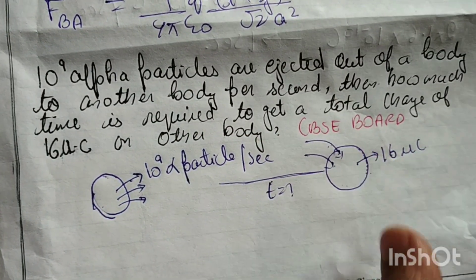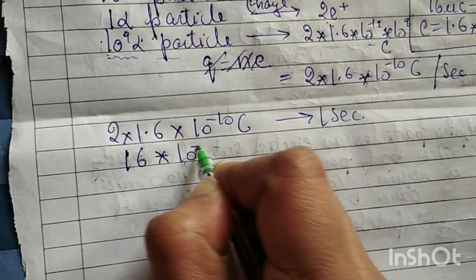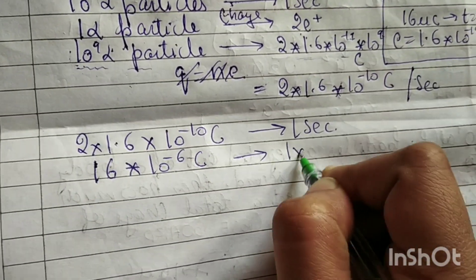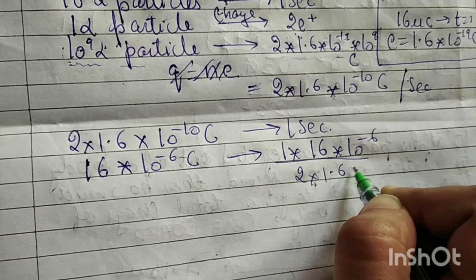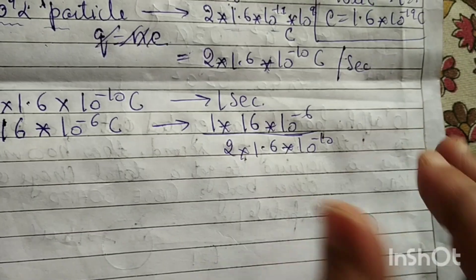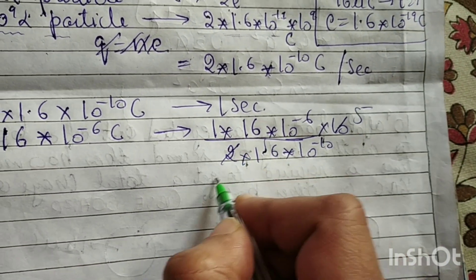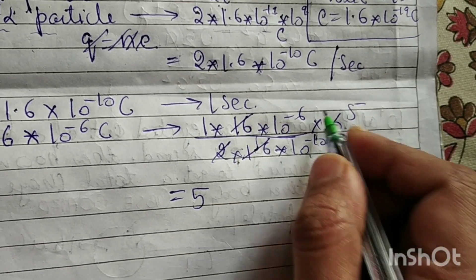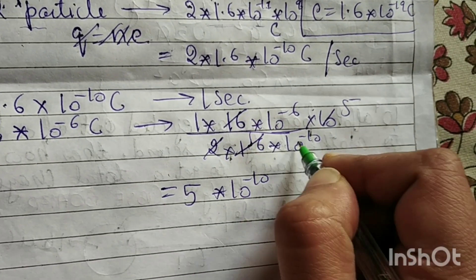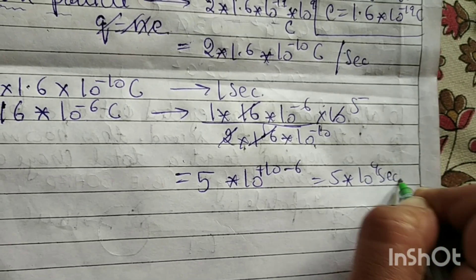Now we need to find how many seconds it takes for the other body to acquire 16 microcoulombs. 16 microcoulombs equals 16 into 10 to the power minus 6 coulombs. Time equals 16 into 10 to the power minus 6 divided by 2 into 1.6 into 10 to the power minus 10. Simplifying: 2 into 1.6 gives 3.2, and 16 divided by 3.2 gives 5. The powers: minus 6 minus (minus 10) gives plus 4. So time equals 5 into 10 to the power 4 seconds.